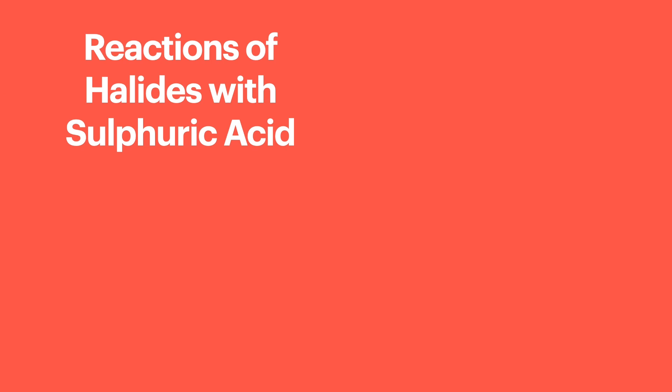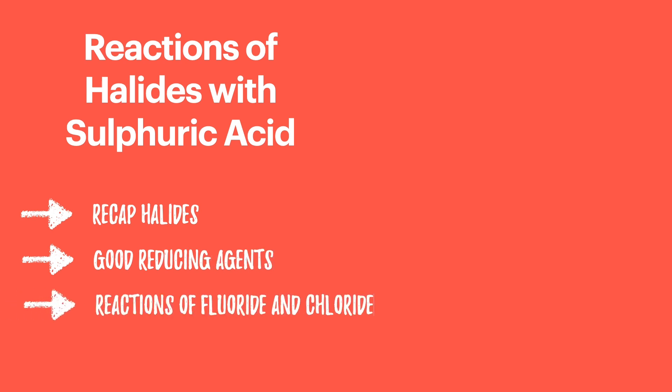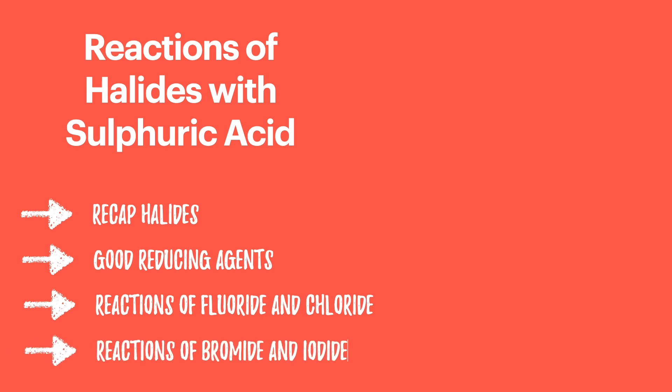Hello chemists and welcome back to Bale's Chemistry. In this episode I'm going to explore the reactions of the halide ions with sulfuric acid. This will start by looking at a recap of the halides, then we'll move on to consider what makes a good reducing agent, then we'll take a look at the reactions of sodium fluoride and sodium chloride, before finishing up with the reactions of sodium bromide and sodium iodide. I'll be rounding up this episode with a summary of all the key points that you need to get down for your notes.